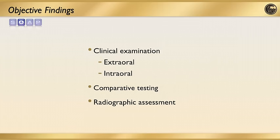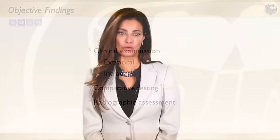Moving on to our objective findings — this is what we as clinicians are going to find. We want to look for agreement or correlation between what the patient has told us and what we see. There are three parts to this objective segment: our clinical exam, our tests, and our radiographic assessment. We want to start with things that are general and move to the more specific, and we want to document everything.